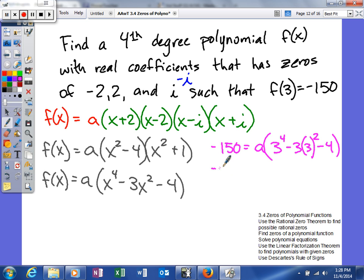So working this out, 3 to the fourth, 3 times 3 is 9, times 3 is 27, times 3 is 81. So we'll get 81 minus 9, so it'll be 27, minus 4. So let's see, that'll be 31, so we'll get negative 150 is equal to 50a. So divide both sides by 50, and you should get a to be a negative 3.